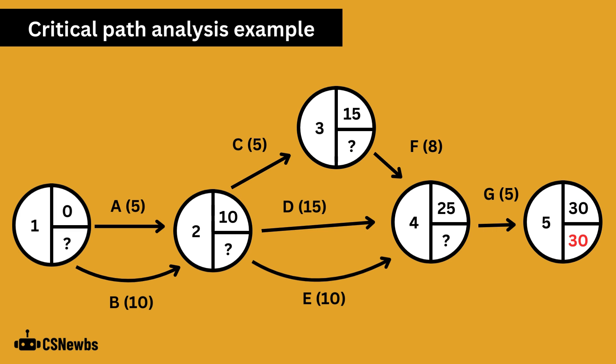Now we work backwards through the diagram to work out the latest finish time. The latest finish time of the final node, number 5 in this example, is always the same as its earliest start time, so it is 30 days.